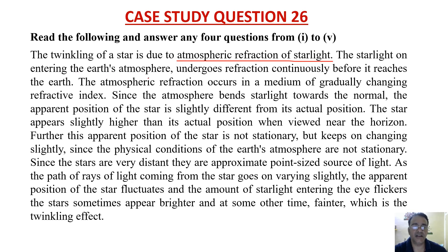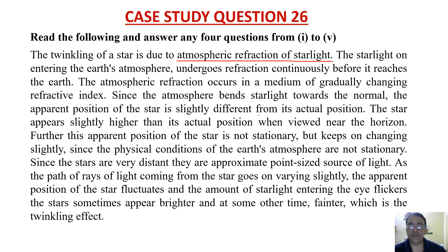Atmospheric refraction of starlight — the starlight on entering the earth's atmosphere undergoes refraction continuously before it reaches the earth. The atmospheric refraction occurs in a medium of gradually changing refractive index. Since the atmosphere bends starlight towards the normal, the apparent position of the star is likely to differ from its actual position.